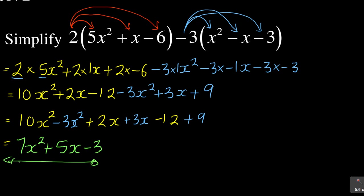That is how you simplify it, and this becomes your final answer, because you cannot simplify it further. Do not be tempted to say 7 + 5 and get 12 — there is nothing common between x² and x, and nothing common between x and the constant. x² means power 2 and x means power 1 — these cannot be added together. This is a common misconception. Check the textbook I wrote, Mathematics N1 for the Underdogs, for rules on addition, multiplication, division, and simplification of algebra.